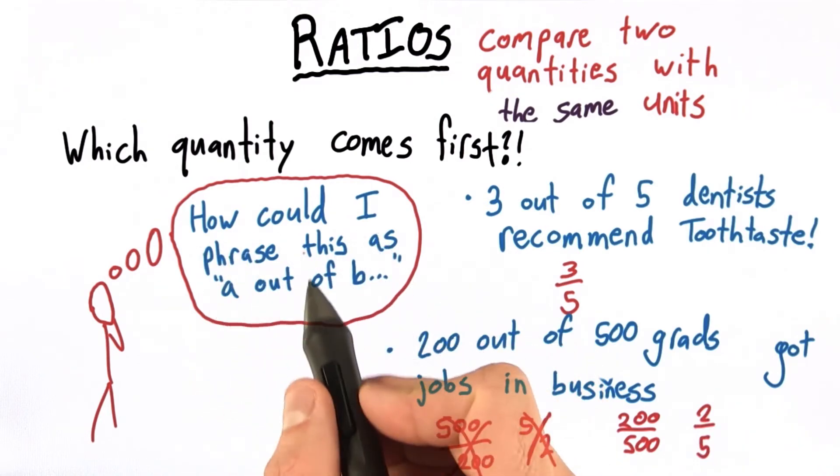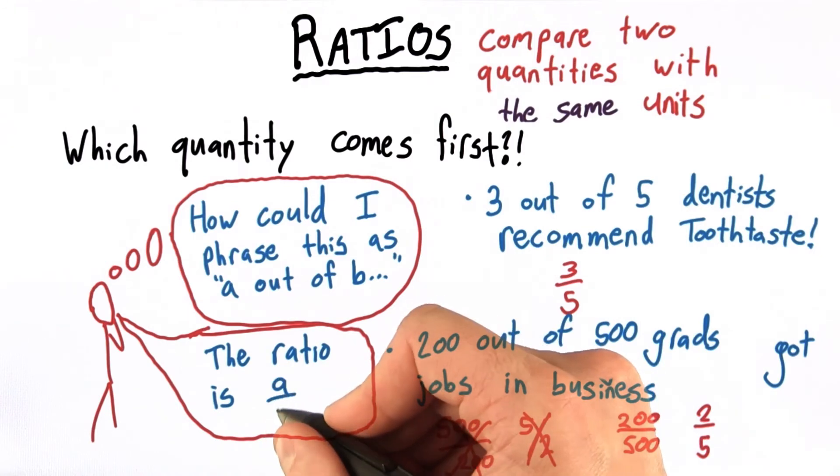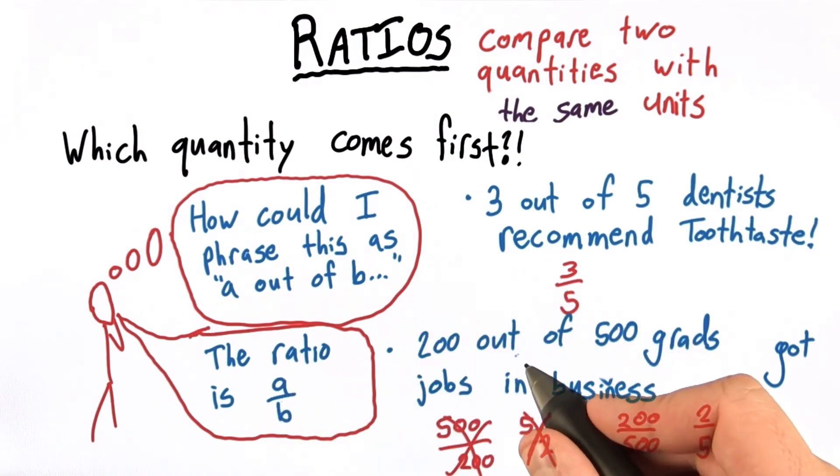So it looks like once I can phrase something as A out of B, then I can say that the ratio is A over B. Let's do a little bit of practice.